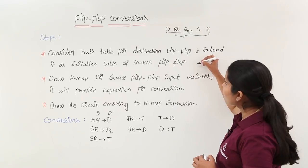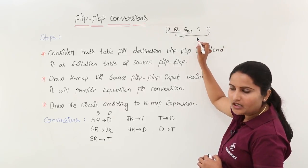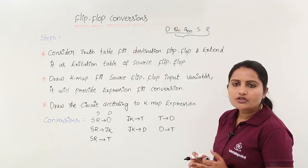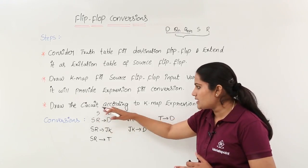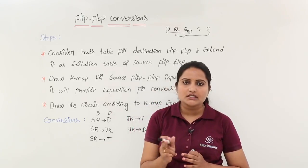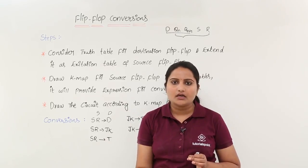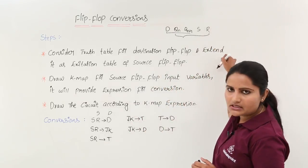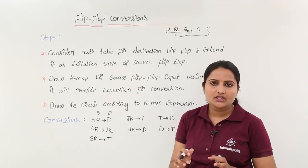After maintaining the excitation table, you need to consider the source variable column — that means draw a K-map for the source flip-flop input variables. The source flip-flop input variables are S and R, so you need to draw a K-map for S and a K-map for R. This will give you an expression for the conversion. By using that expression obtained from the K-map, you are going to draw the circuit. Three steps are mandatory: first, maintain the truth table of the destination flip-flop and extend it as the excitation table of the source flip-flop; second, take K-map for the source variables; third, draw the circuit from the K-map expression.